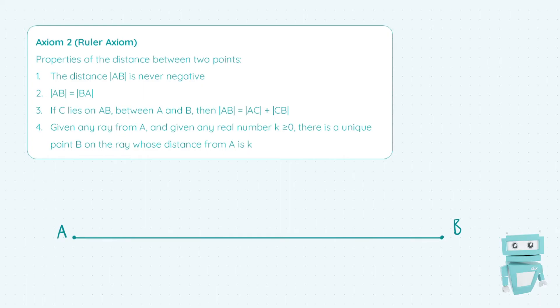Point two is that |AB| equals |BA|. In other words, regardless of the direction in which you measure the distance, it's always going to be the same. Distance isn't affected by direction.